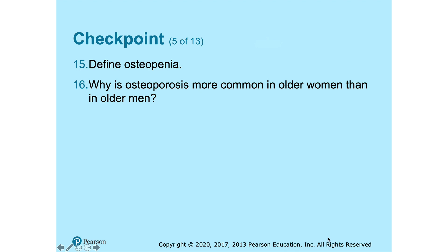Our checkpoint has two questions. First: define osteopenia. Osteopenia is inadequate ossification and is common to the aging process. It results from decreasing osteoblast activity accompanied by normal osteoclast activity.